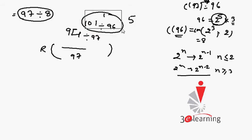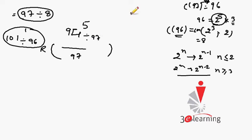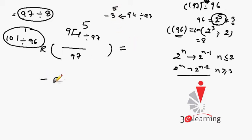We replace this power by the value 5, placing it just above 94 as the new power. Now we divide 94 raised to power 5 by 97. When 94 is divided by 97, the remainder is −3. So 94 raised to power 5 divided by 97 gives remainder (−3) raised to power 5, which equals −243.